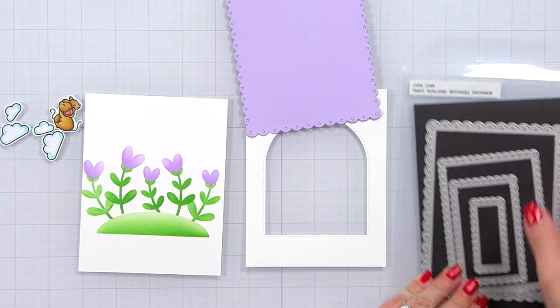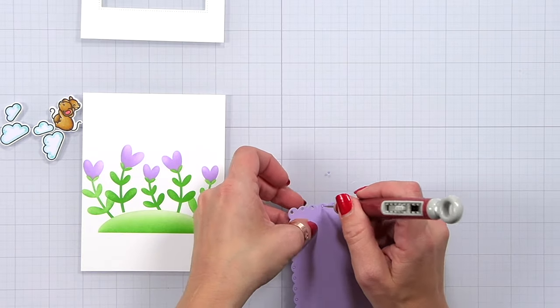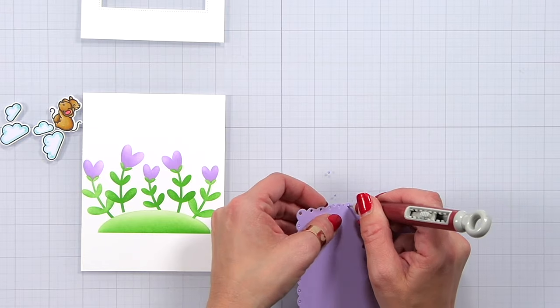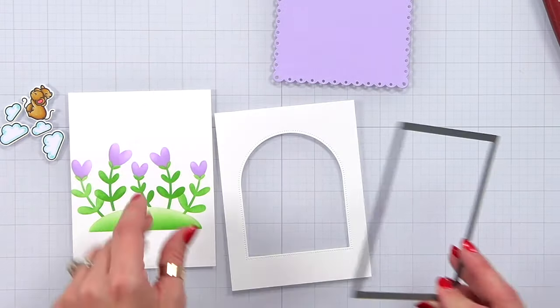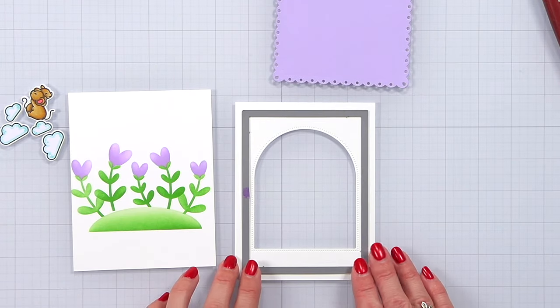I also took some of the purple textured canvas cardstock and I cut out the fancy scalloped rectangles from that. There are some little bits that I need to poke out so I just use my craft pick to do that. I wanted to trim my framed piece out just a little bit so it fit inside of that fancy scalloped rectangle.